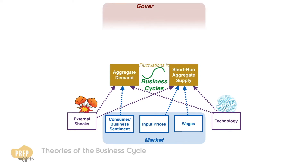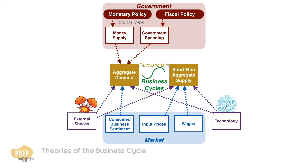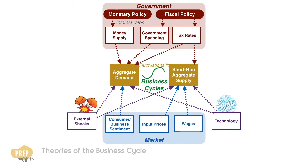Government policies also have significant influence. Monetary policies affect the rate of increase of money supply through instruments like the benchmark interest rate, which can help to shift aggregate demand. Fiscal policies refer to government spending, which has a direct effect on the aggregate demand. Changes in tax rates affect both aggregate demand and short-run aggregate supply.